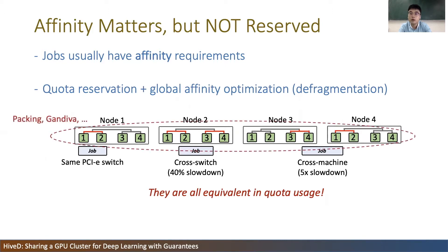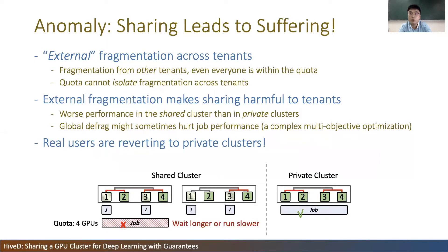The state of the art is to reserve a quota and apply some affinity optimization globally, for example packing the GPUs or defragmentation with schedulers like Gandiva. We find that the quota mechanism can lead to anomalies where some tenants may experience worse performance in the shared cluster than they would on their private cluster. In this example, we have four jobs each using one GPU. Now another tenant with a quota of four GPUs submits a four-GPU job. The tenant has enough quota. On a private cluster with a four-GPU node, the job will run on a single machine immediately. However, on a shared cluster, this job has to either wait longer or run slower, because the GPU affinity has been fragmented by other tenants, although every tenant is within the reserved quota and does nothing wrong.